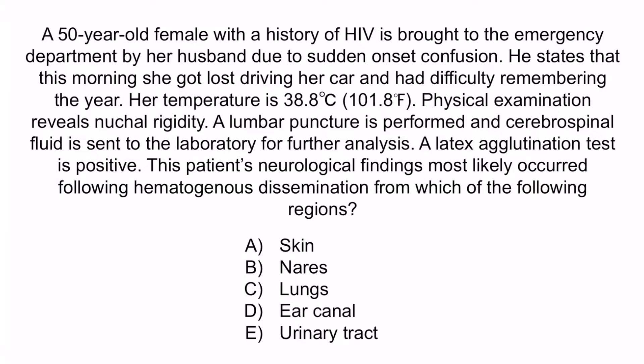Let's review with a question. A 50-year-old female with a history of HIV is brought to the emergency department by her husband due to sudden onset confusion. He states that this morning she got lost driving her car and had difficulty remembering the year. Her temperature is 38.8°C (101.8°F). Physical examination reveals nuchal rigidity. A lumbar puncture is performed and cerebrospinal fluid is sent for analysis — a latex agglutination test is positive. Her neurological findings most likely occurred following hematogenous dissemination from which region? A) skin, B) nares, C) lungs, D) ear canal, or E) urinary tract.